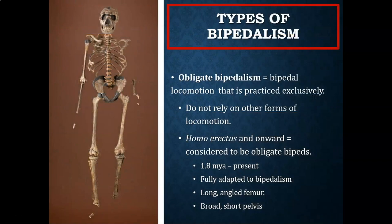The next type of bipedalism is obligate bipedalism, seen with Homo erectus and onward. Those hominins dating 6 million to about 3 million years ago are habitual bipeds, and those hominins from 1.8 million years ago to present are obligate bipeds. Obligate bipedalism is bipedal locomotion that is practiced exclusively — obligate bipeds do not rely on other forms of locomotion. We see evidence for a commitment to obligate bipedalism with Homo erectus and onward.